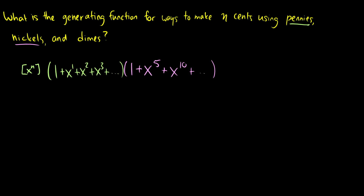For dimes, we can have 0 cents, 10 cents, 20 cents, and so on. So if we want to know how many ways can we make 7 cents, we just multiply them out and see how many ways there are to get x to the 7. If we want to look at 10 million dollars, we can look at x to the 1 billion. We can do whatever we want — that's pretty cool.